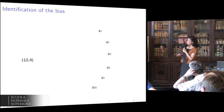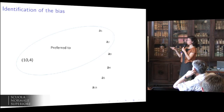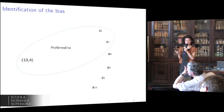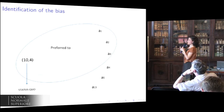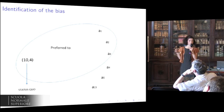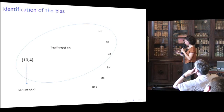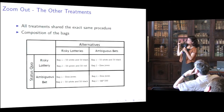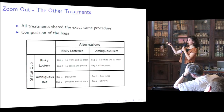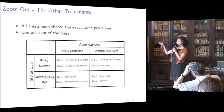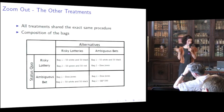Using the elicited preferences from the neutral frame, we identify a subset of alternatives that the 10-4 lottery is preferred to. When we later endow the subject with the 10-4 lottery, we look, as evidence for the status quo bias, for an expansion of that subset of preferred options. In the other treatments, everything stays the same except the composition of the two bags — in the risky-risky treatment we used two bags with known composition, and in the ambiguous-ambiguous case, two bags with unknown composition.